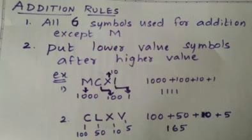Next, we will go to the addition rule. In the addition rule, all symbols except M can be used for addition. That is, we put the lower value symbols after the higher value. Since M is the highest value used in Roman numerals, we should not use it for addition. The other six symbols can be used.